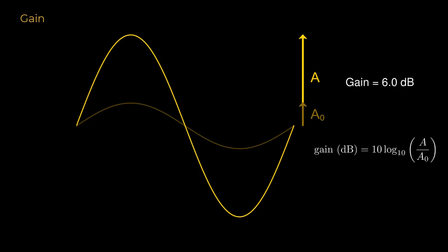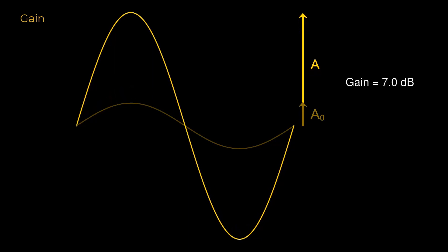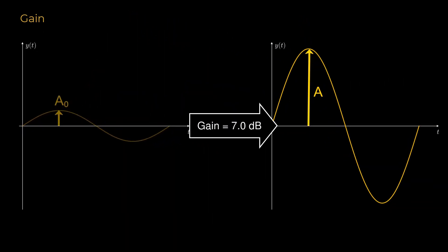Irritatingly, sometimes it is calculated with a multiplier of 20 instead of 10, so watch out for that. Notice a gain isn't a characteristic of a signal by itself, like amplitude. Instead, it is a measure of how a signal's amplitude has changed.